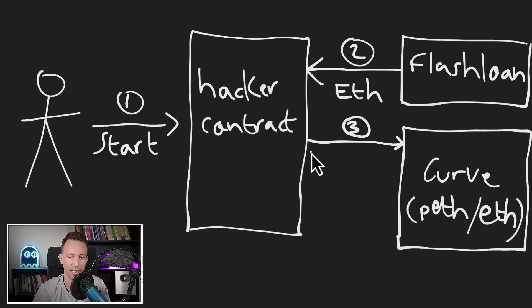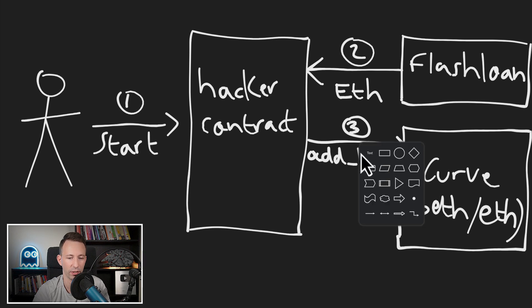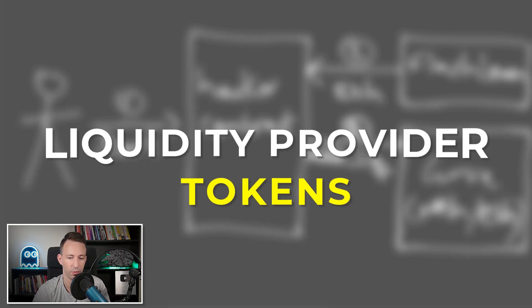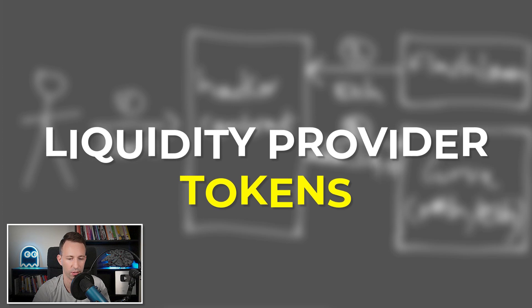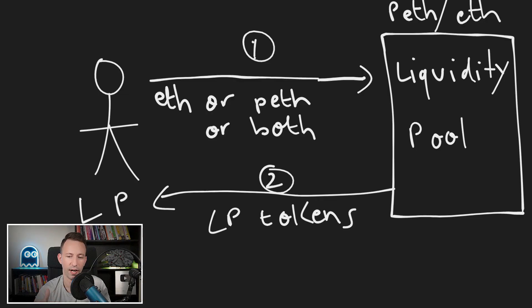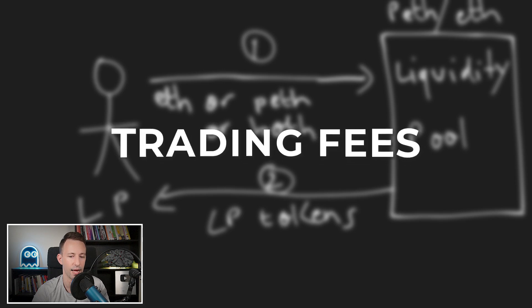The attacker took the flash loan money and sent half of it to Curve by calling the add liquidity function, receiving some liquidity provider tokens in return. A liquidity provider is someone that provides capital to a decentralized exchange, allowing traders to use this liquidity to buy and sell tokens. In exchange, the liquidity provider earns trading fees — but our attacker wasn't interested in that. They had bigger ambitions.